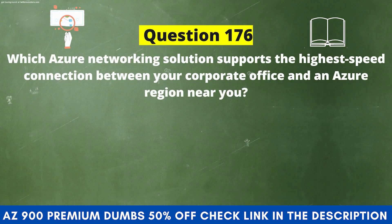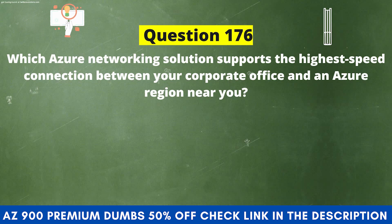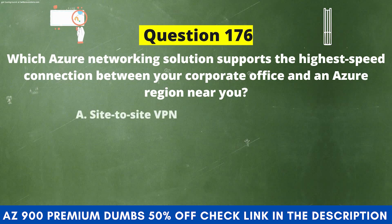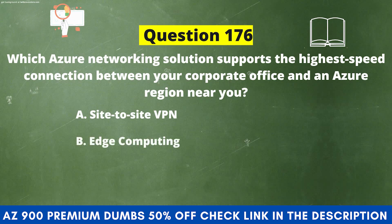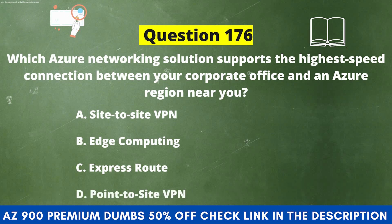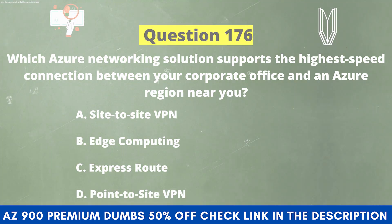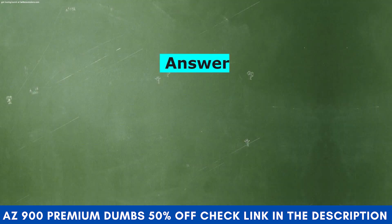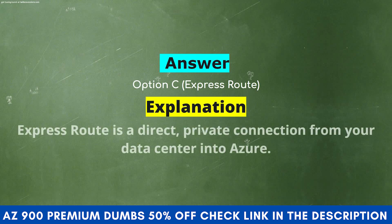Which Azure networking solution supports the highest speed connection between your corporate office and an Azure region near you? Option A: Site-to-site VPN. Option B: Edge computing. Option C: ExpressRoute. Option D: Point-to-site VPN. The correct answer is Option C, ExpressRoute. ExpressRoute is a direct private connection from your data center into Azure.